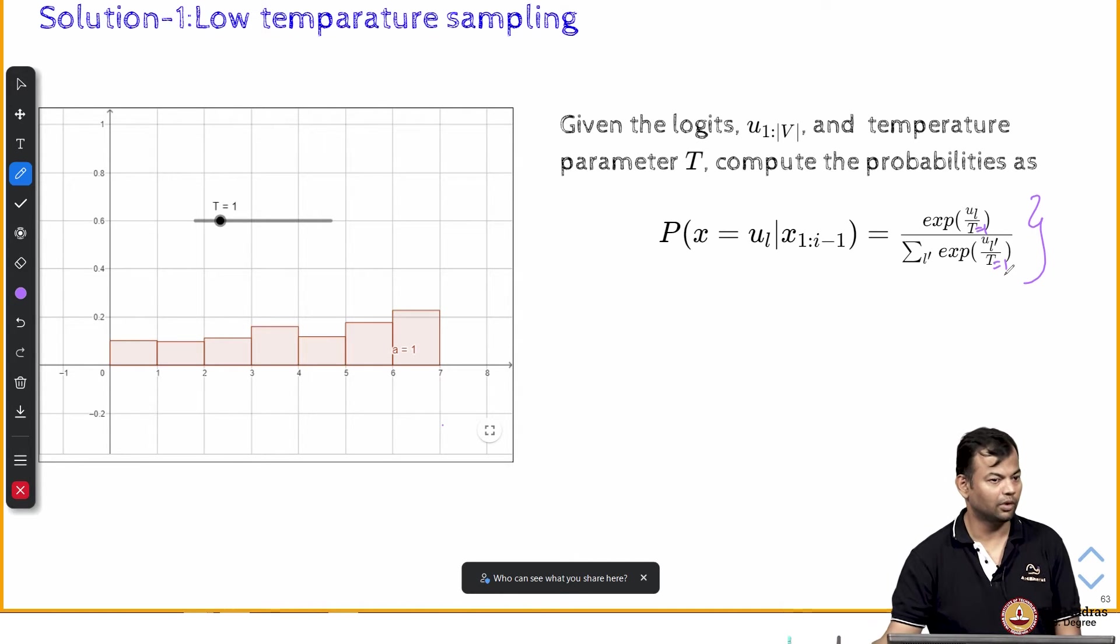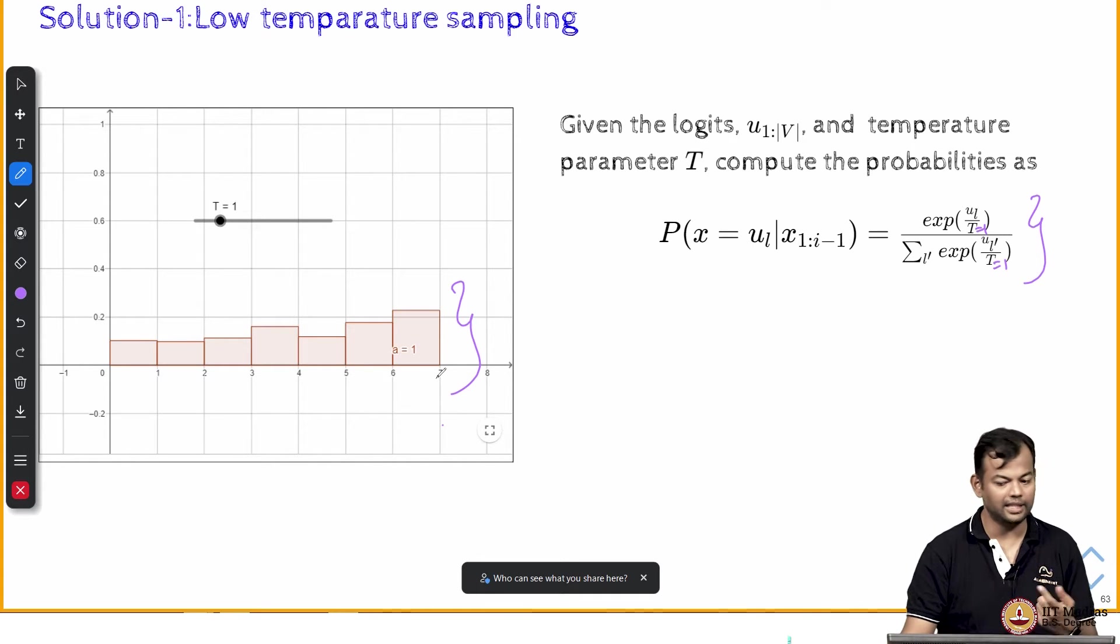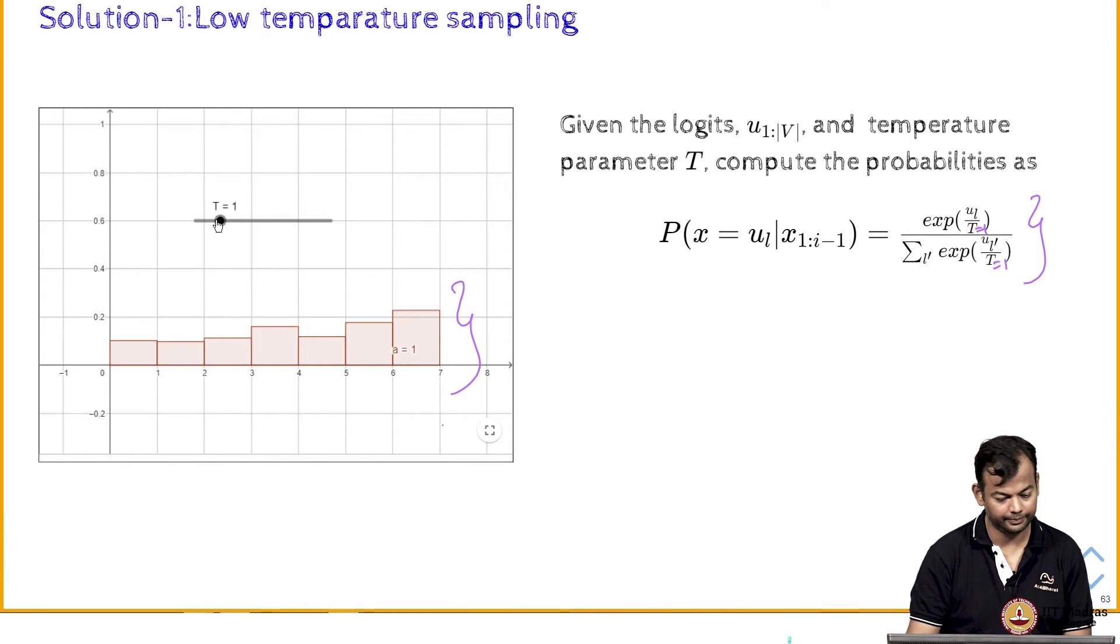If I increase T, what happens? So when I put T equal to 1, I got a distribution which looks like this. Now if I increase T, what do you think will happen? Let us see what happens when we increase T: distribution becomes flatter. I will go back to T equal to 1. Ok, now what do you think will happen if I decrease T? Distribution becomes peaky.